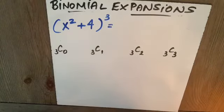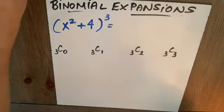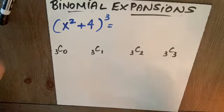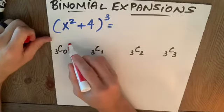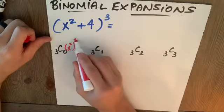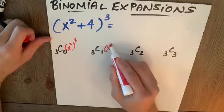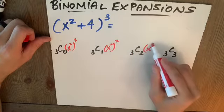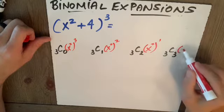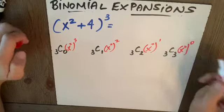Those are my four coefficients. And my first term, which will go in descending order of exponents, will be x squared to the third, x squared to the second, x squared to the first, and x squared to the zero.